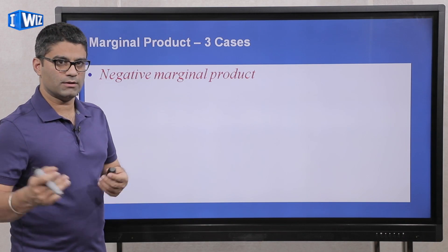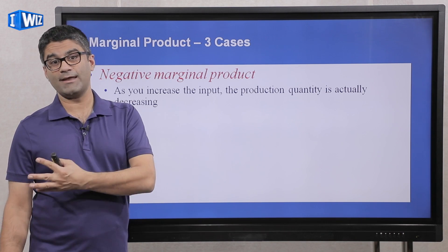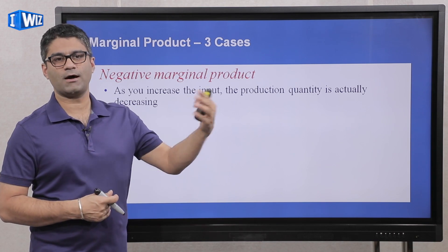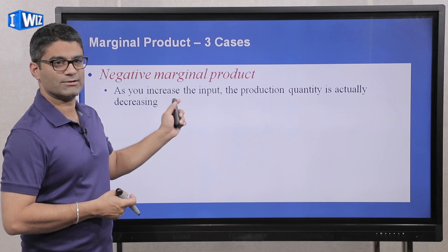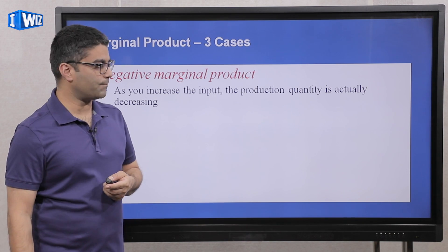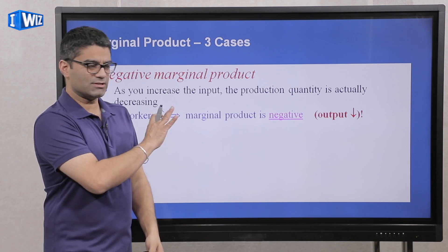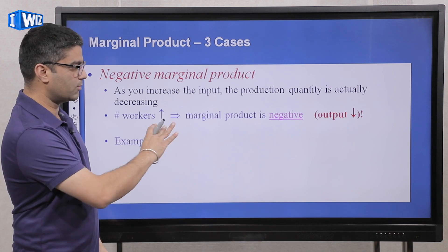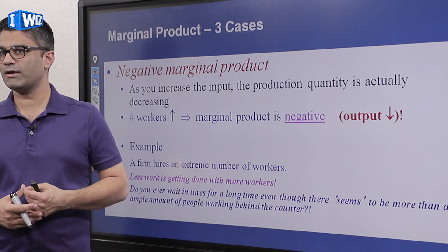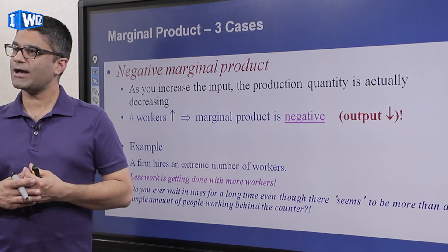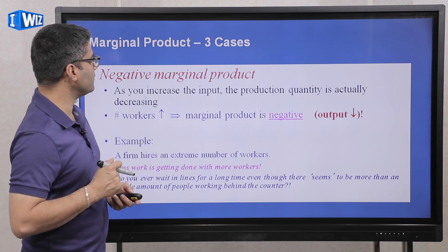The third and least common case is negative marginal product — if you hire an extra person, total output actually falls. For example, five people produce 100 cakes, but a sixth person causes output to drop to 90 cakes. Obviously you don't want to hire that sixth person. This happens when you have too many workers and not enough of other inputs — they get in each other's way, like too many staff behind a counter with too few customers.